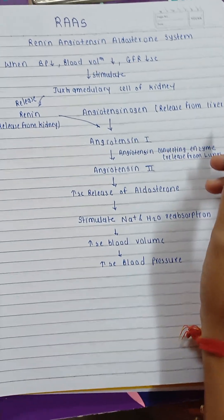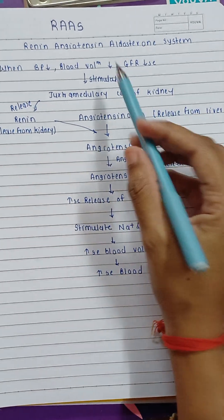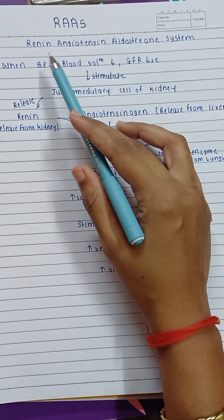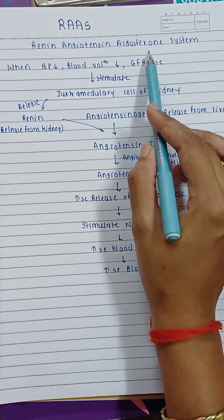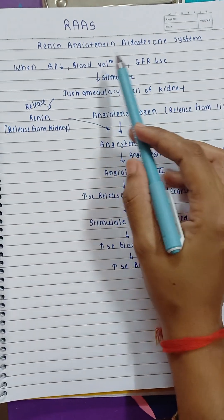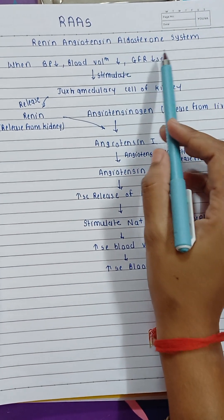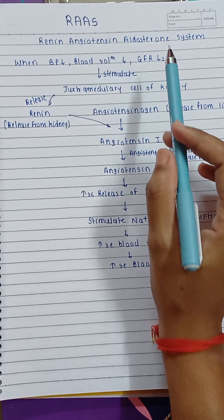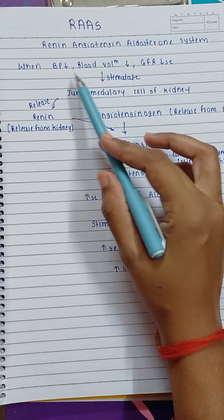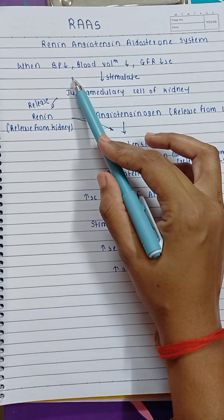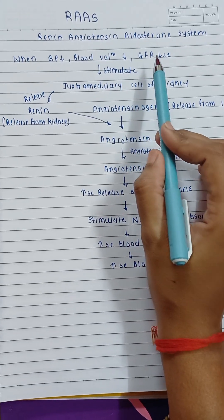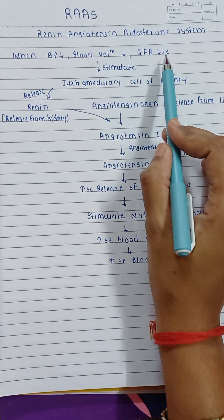In this video we'll see the RAS mechanism, or Renin-Angiotensin-Aldosterone System, which plays a major role when blood pressure is falling, blood volume is decreased, and glomerular filtration rate is decreased.